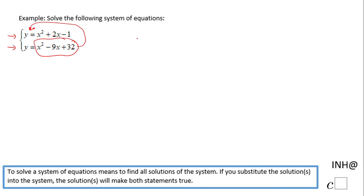But let's see what we get here. We get x squared minus 9x plus 32. That is the y that is replaced by this expression, equals x squared plus 2x minus 1.